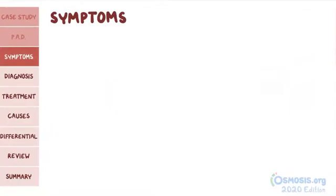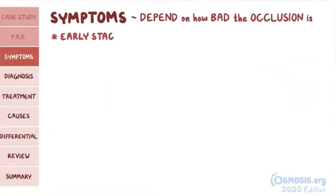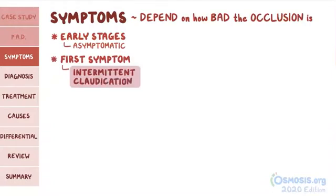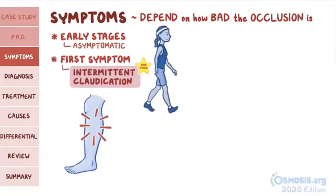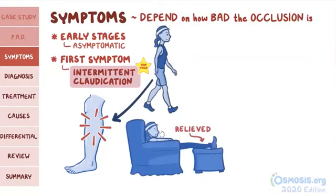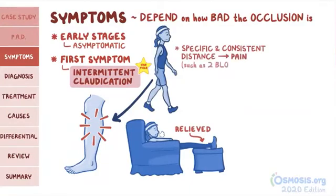The symptoms of peripheral artery disease depend on how bad the occlusion is. In the early stages of the disease, individuals may be completely asymptomatic. One of the first symptoms is intermittent claudication, characterized by cramping pain in the affected area that comes about during exercise and is relieved with rest. Individuals often describe a specific and often consistent distance that brings about the pain, such as walking two blocks.